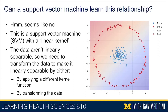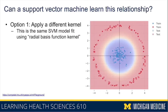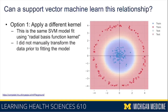Changing the kernel from a linear kernel to a radial basis function (RBF) kernel — using otherwise the same settings — gives us basically the perfect boundary we were expecting, without any transformation to the data prior to fitting. The kernel itself does the transformation for you so that you can efficiently learn this relationship using a support vector machine.